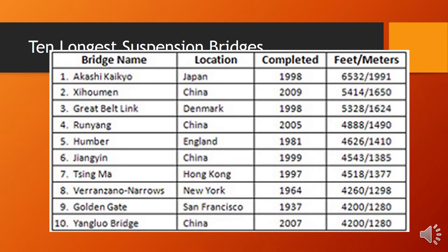Here are ten of the longest suspension bridges throughout the world. You can see number one is in Japan, spanning 6,532 feet across. The largest one actually in the United States is in New York — the Verrazano Narrows Bridge, built in 1964, spanning approximately 4,260 feet across.